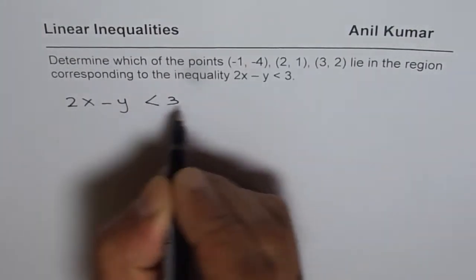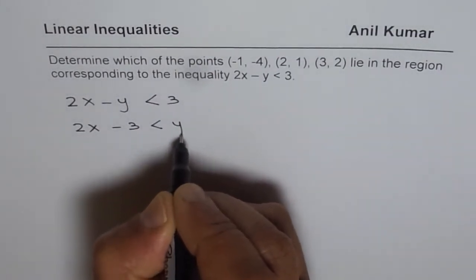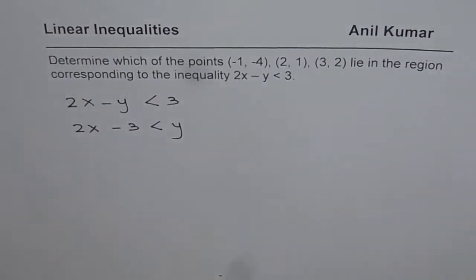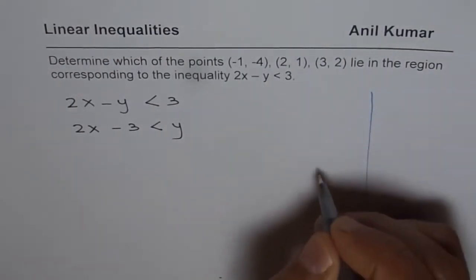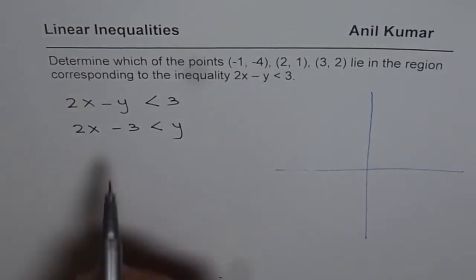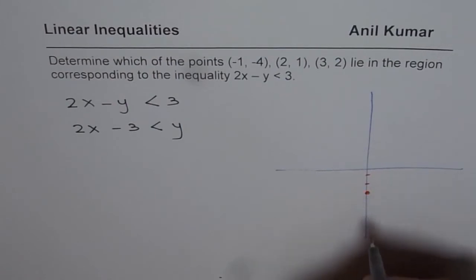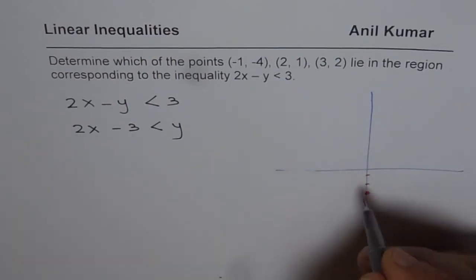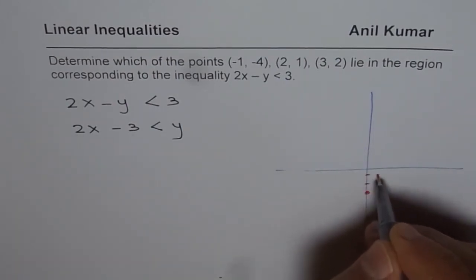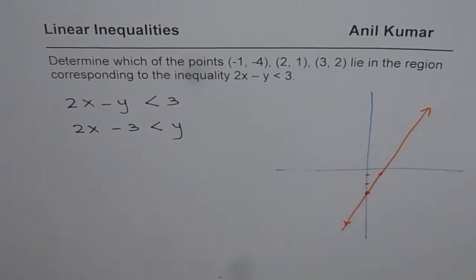If you rearrange, you get 2x - 3 < y. It really means that if I sketch the line y = 2x - 3, which is, let us say, 1, 2, 3, that becomes the y-intercept. Slope is 2x, that means rise of 2 and run of 1, so kind of like this. We get a line which is kind of like this, that is the line.